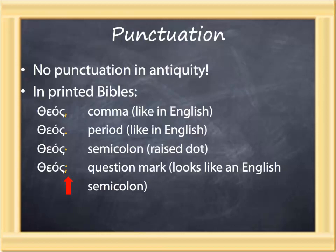Punctuation, like breathing marks, was not part of the text in antiquity. It has been added by modern editors to help the student figure out what's going on in the sentence. There are four punctuation marks in Greek. The comma looks like and acts like a comma in English, as does the period. But the semicolon — a harder stop than the comma but not as hard as a period — is indicated in Greek by a raised dot, not by the semicolon as we know it. And here's the confusing one: the question mark in Greek looks like an English semicolon. So if in Greek you see what looks like a semicolon, it is in fact a question mark.